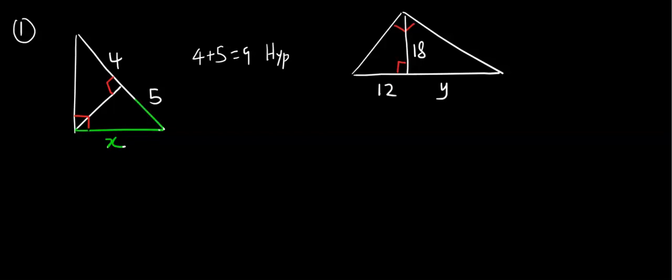I'm going to color 5 also in green because 5 is the segment that is adjacent to this leg. It's the projector of this leg. Therefore, I'm going to establish a relationship of beautiful proportions as leg, leg, hypotenuse.